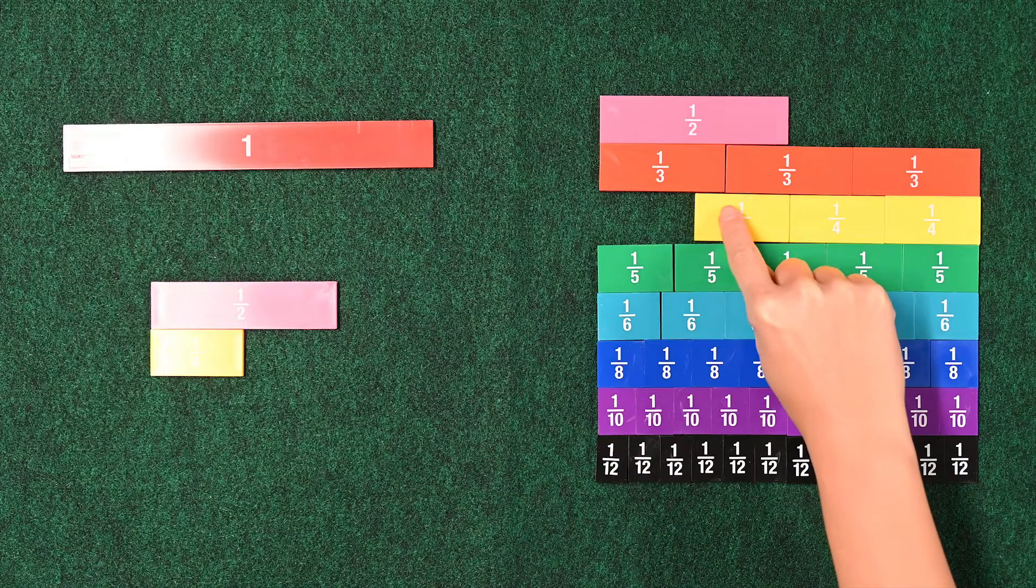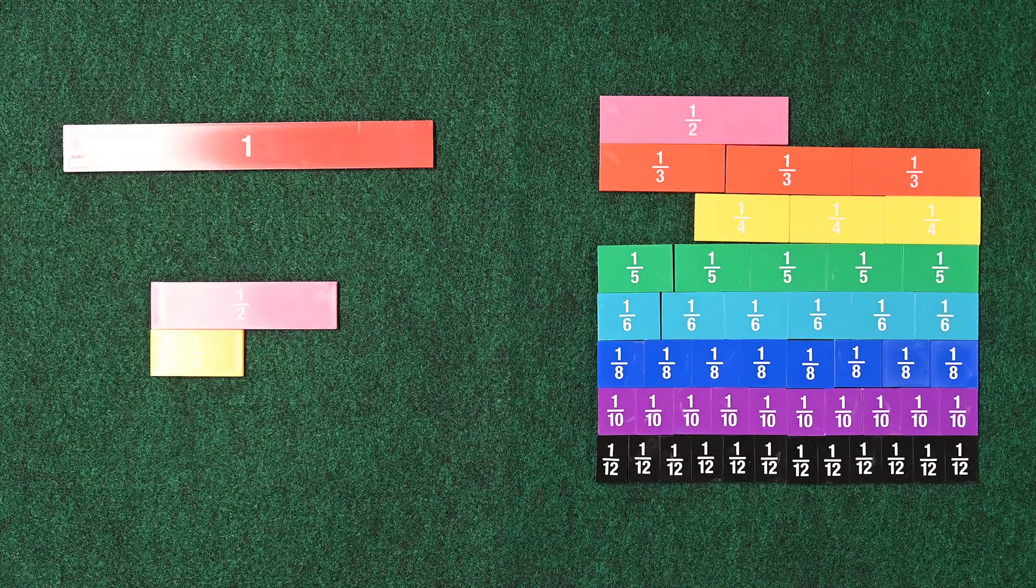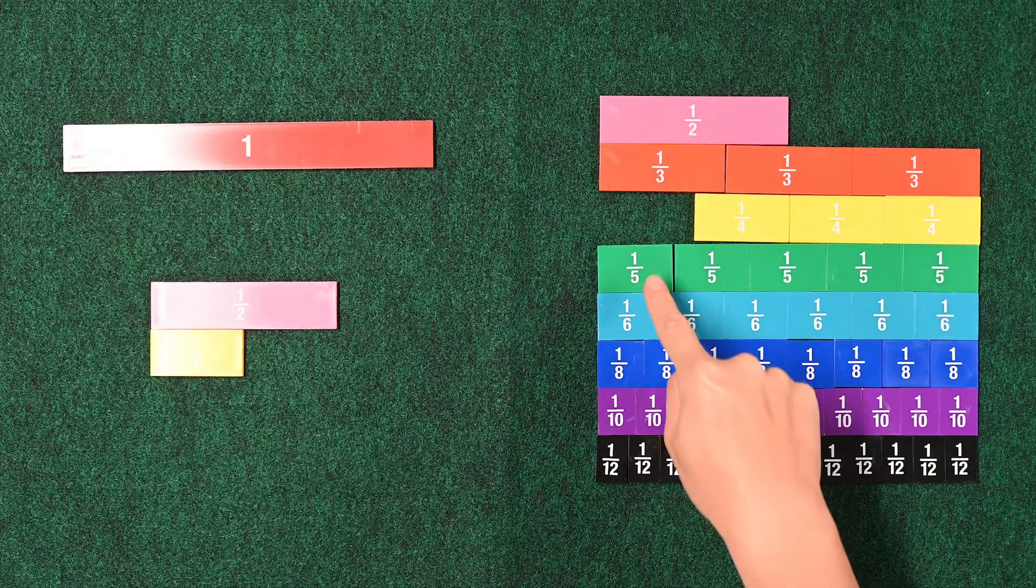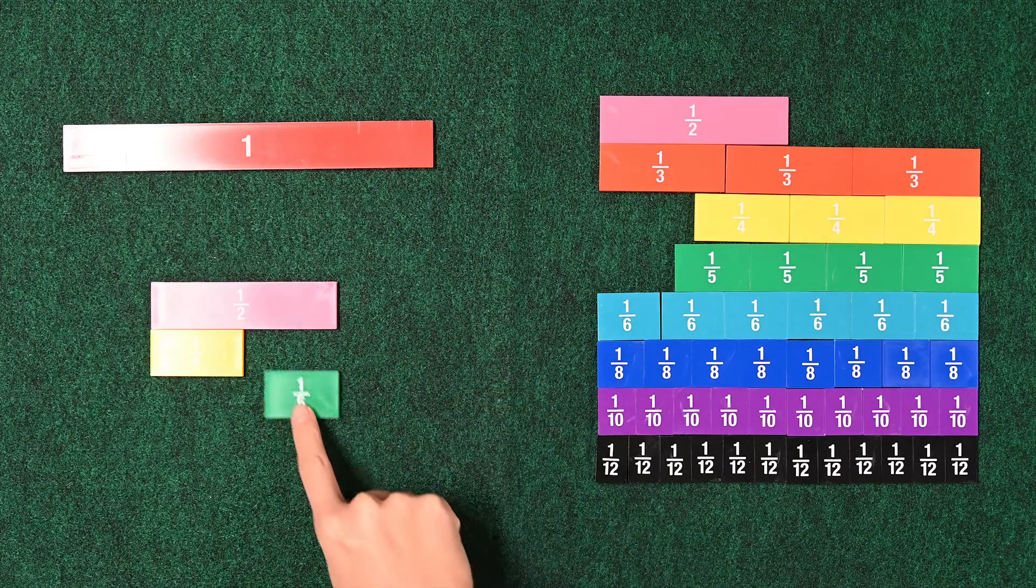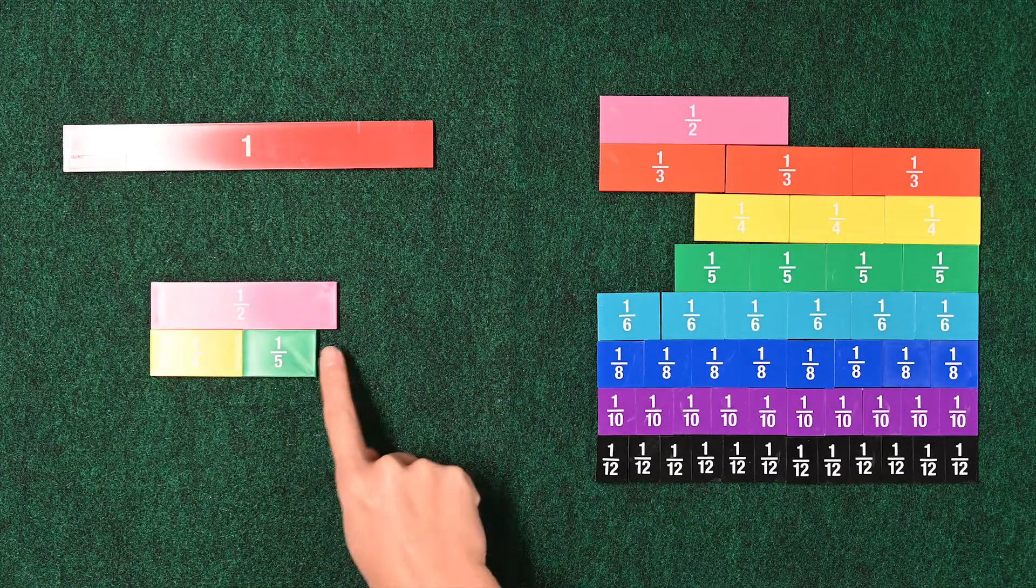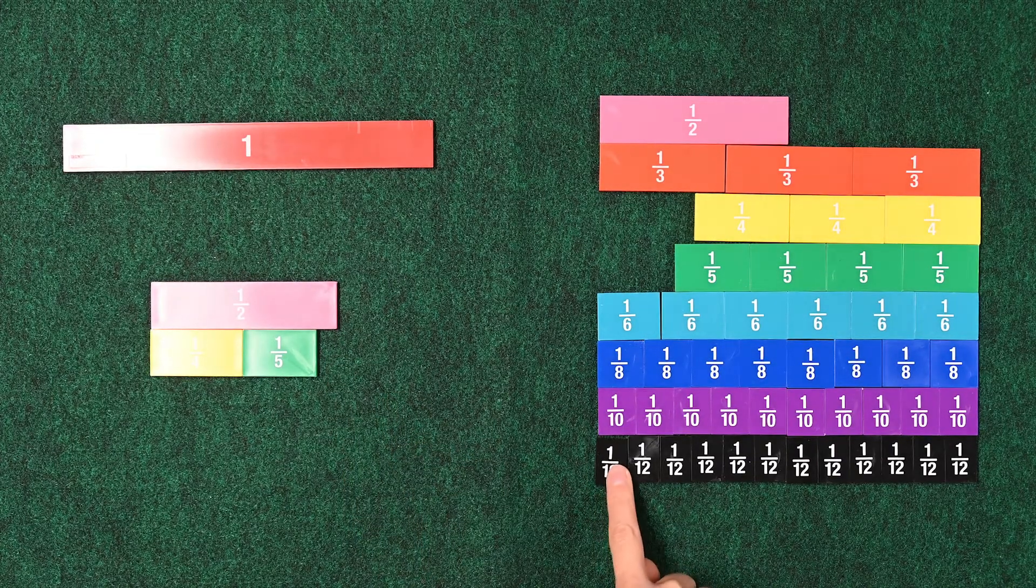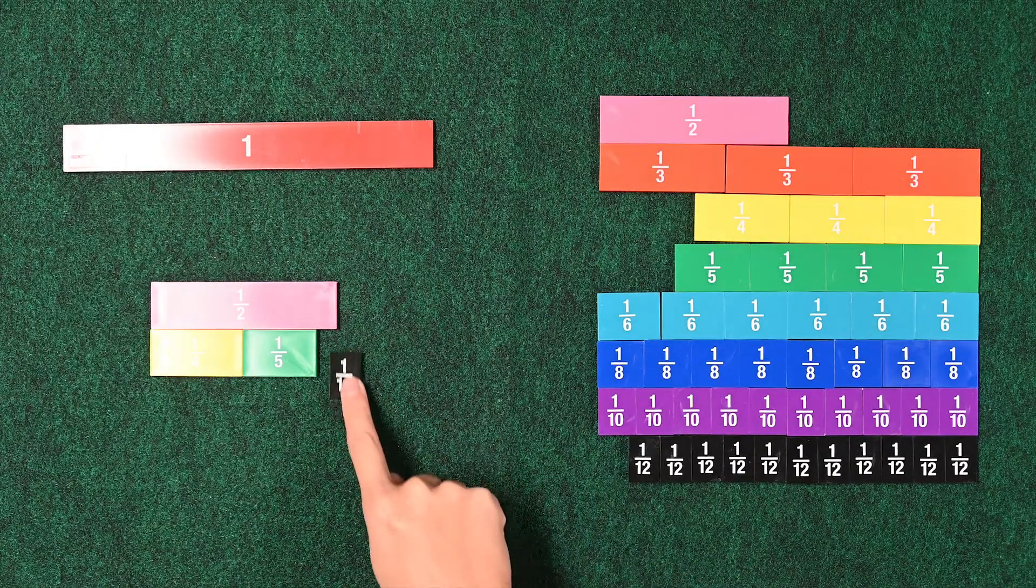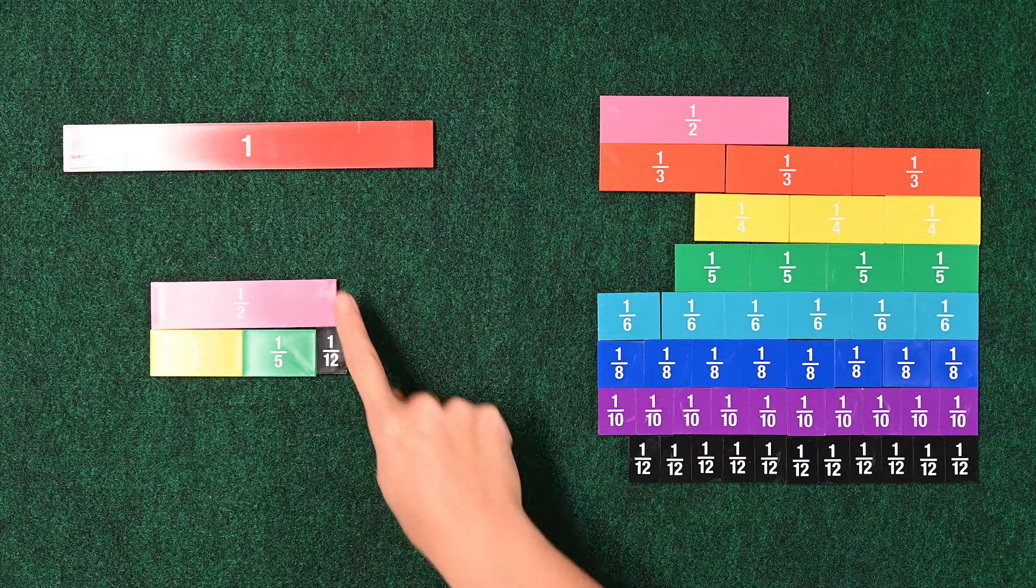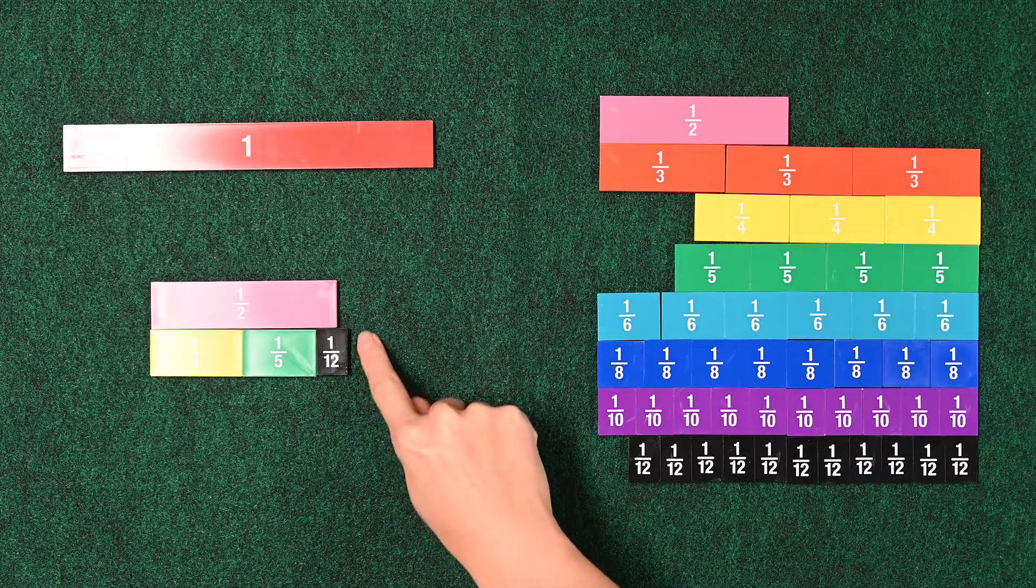So what should we use? Should we try a 1 fifth? We can try a 1 fifth. 1 fifth, and there's a little space left. Do we have a piece that's that small? We can try the 1 12th. Oops, too big. So I think the 1 fifth and the 1 12th have to go.